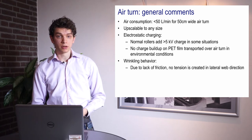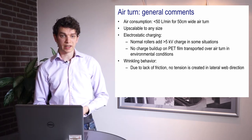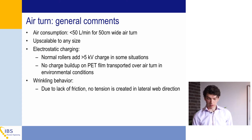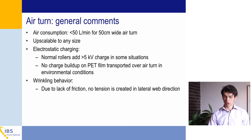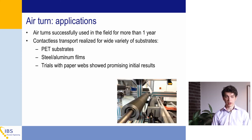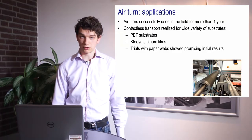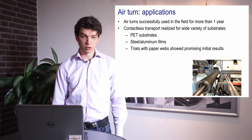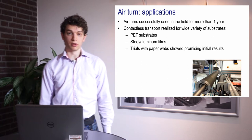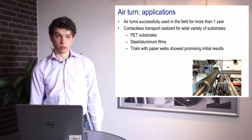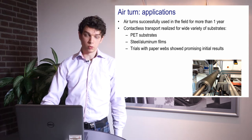Regarding wrinkling behaviour: due to the lack of friction in the contact, there will be no tension created in the lateral direction of the web, which may also improve wrinkling behaviour. The air turns have been successfully used in the field for more than a year with all kinds of substrates — PET in most cases, but also steel and aluminium films. Trials have also been done with paper webs, with promising first results suggesting it may even be possible to support paper webs contactlessly with an air turn.